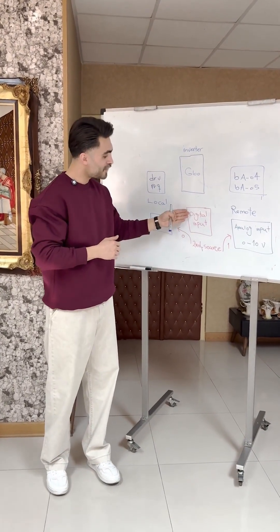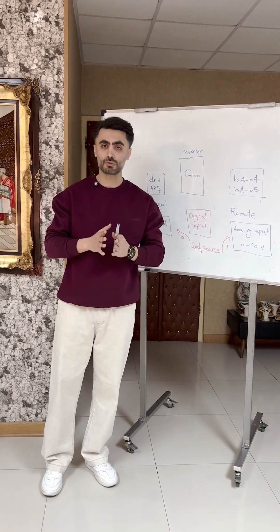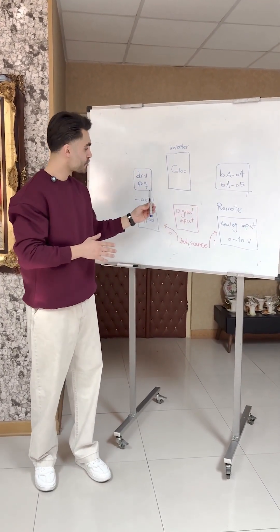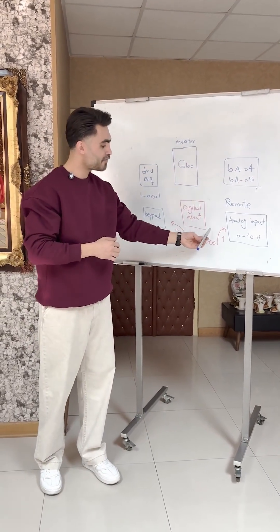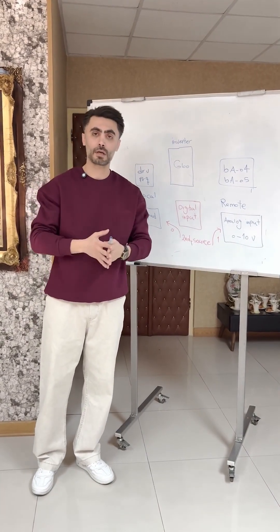But how does it work? You need to assign one of the inverter's digital inputs as you prefer to the second source mode. If this digital input is deactivated, frequency setting or start stop will be controlled from the local panel. If it is set to logic 1 or is active, both frequency setting and start or stop can be done from the remote.